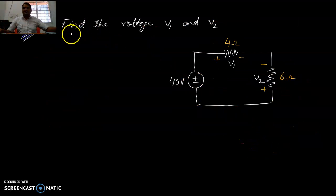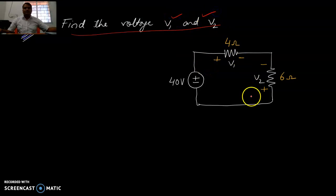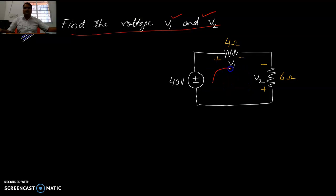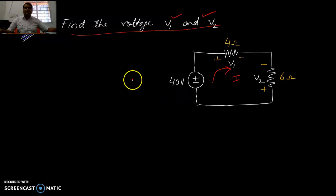Another problem: find the voltage V1 and V2. In the question, the polarity is smartly given directly beforehand. You can choose the direction of current as you want. You don't have to derive a sign convention from the current; you can simply apply KVL and write the equation.